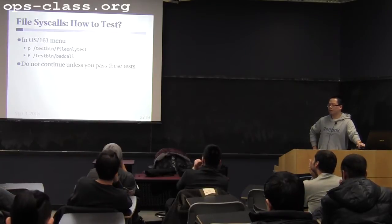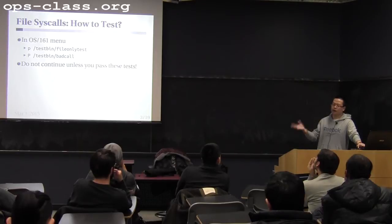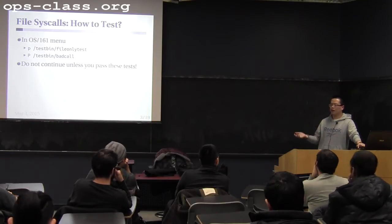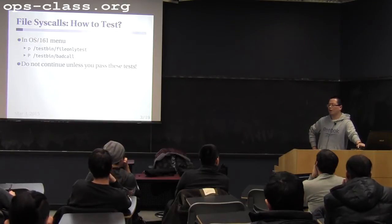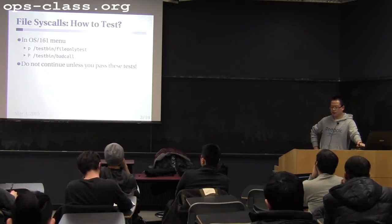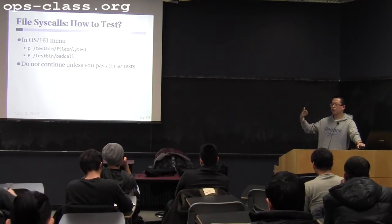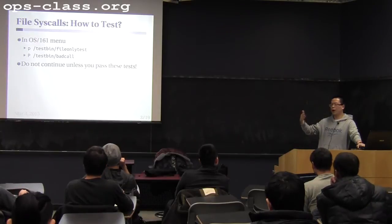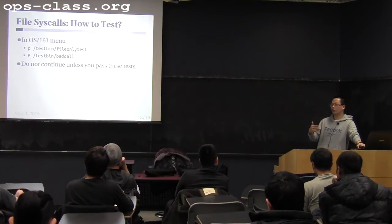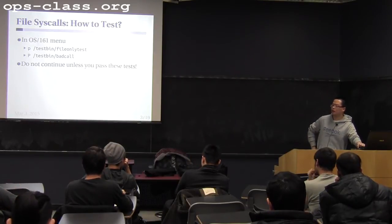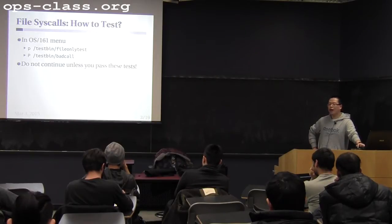A general suggestion for this assignment is that you and your partner get together to get the five syscalls working before you move on to process syscalls. I saw a lot of groups submitting work where one partner does the five syscalls and another does the process syscalls. It won't work because you cannot test any process syscalls unless you have all the file syscalls ready. To run all the tests, you are expected to see print output from the user program — those prints are actually write syscalls to the console stdout file.